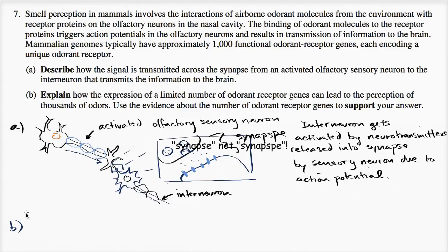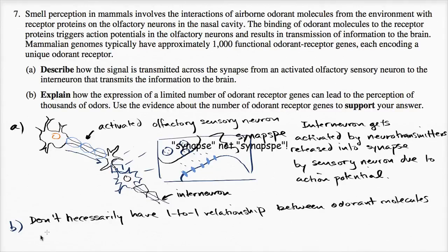So one way to think about it is, this is kind of a theory here, is that you don't necessarily have a one-to-one mapping between odorant receptors and odorant molecules. So don't necessarily have one-to-one relationship between odorant molecules and receptor proteins. Maybe one protein can detect multiple molecules.